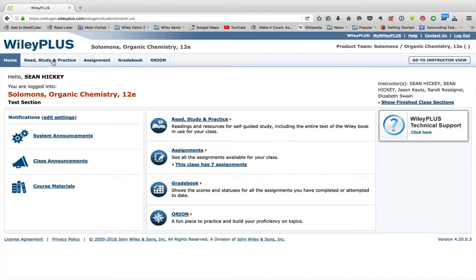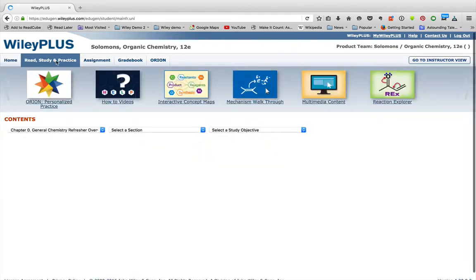When you log into WileyPlus, across the top you'll see Read, Study, and Practice, Assignment, Gradebook, and Orion. Read, Study, and Practice is where you can read your e-book, study additional resources, and do some practice quizzes that we've set up. So you want to click into Read, Study, and Practice to access your e-textbook.